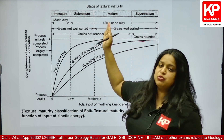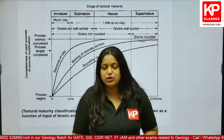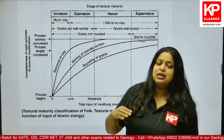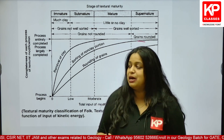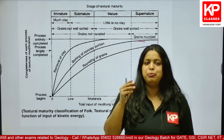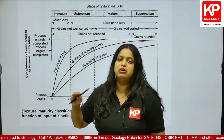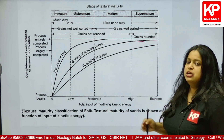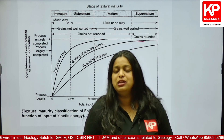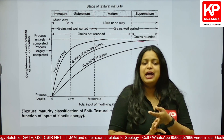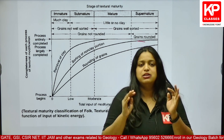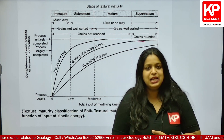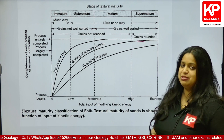When it comes to mature sandstone, the grains may not be well rounded or completely well sorted, but clay content will no longer be present. For a submature sample, clay content will be very little. For an immature sample, clay content will be way higher. So a texturally mature or supermature sandstone means well rounded, well sorted, and zero clay content.